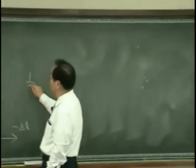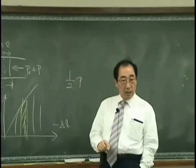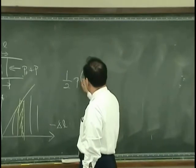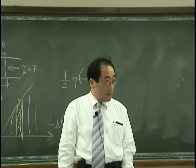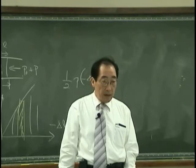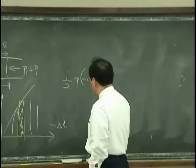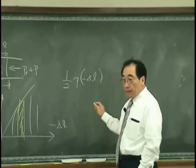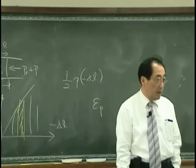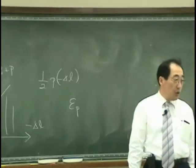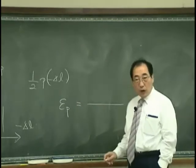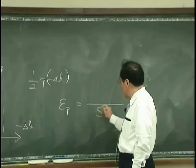has to be one half P minus delta L. And the potential energy, that is energy per unit volume. So per unit volume means the volume I have is S times L.